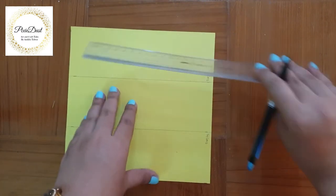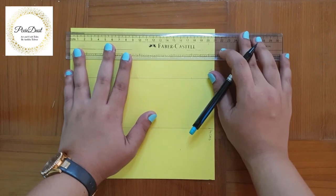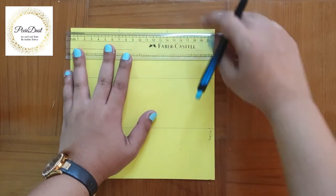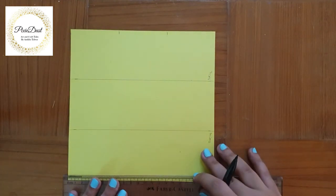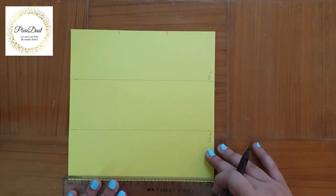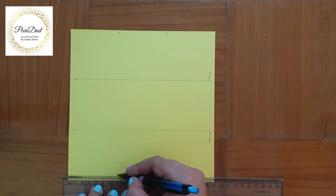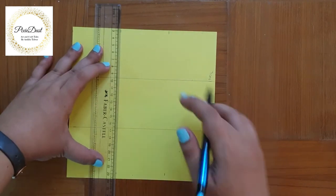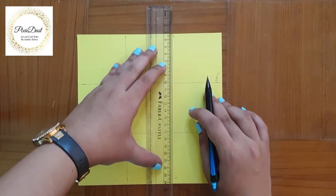I'm going to turn the sheet and again make the same points at 7 centimeters and 14 centimeters on the top and the bottom of the sheet. I will draw a line through the 7 centimeter points and the 14 centimeter points. The lines will create something that looks like a tic-tac-toe board.